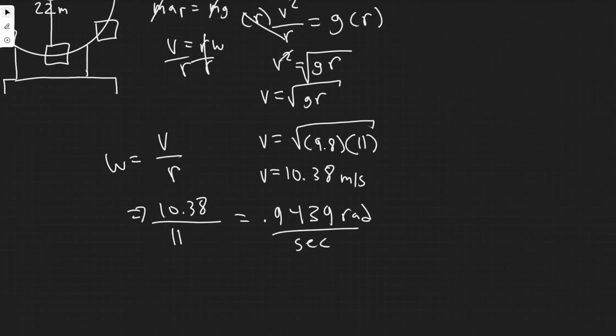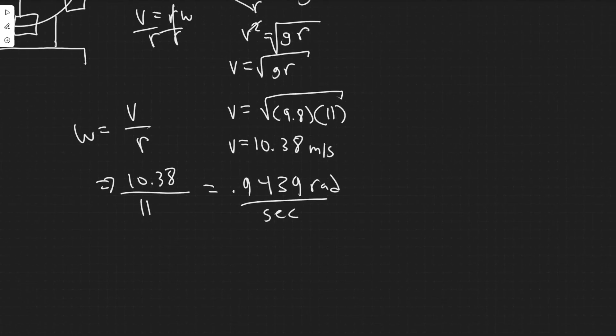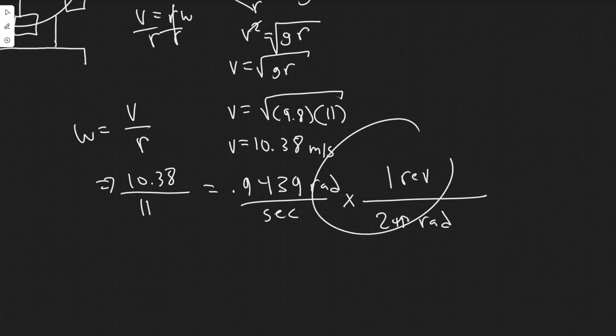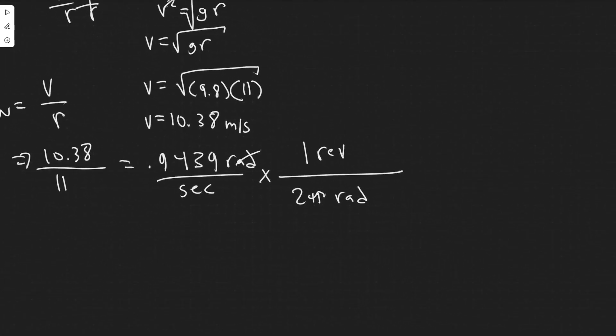And so now we have omega. So all we have to do is calculate the amount of revolutions per minute now. So solving for this, you should know that two pi radians is the same as one revolution. So you kind of remember like the unit circle all the way around is two pi. So one revolution is two pi radians.